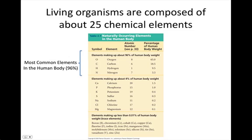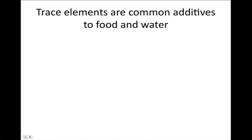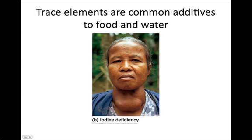Trace elements are also needed, but only in minute quantities. Trace elements are common additives to food and water. One symptom called goiter is due to a deficiency of iodine.